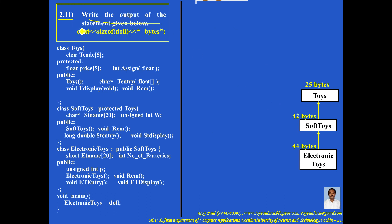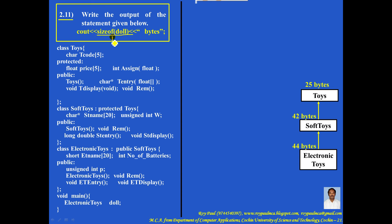Write the output of the statement: cout with the sizeof() function. sizeof() is a built-in function — the header file is iostream.h or fstream.h. What sizeof() does is return the size of the given object in bytes. You can write either the object name or the class name — both are correct. Doll is an object of class ElectronicToys, so sizeof(doll) returns 44 plus 42 plus 25, which is 111. The output of the statement is 111 bytes.